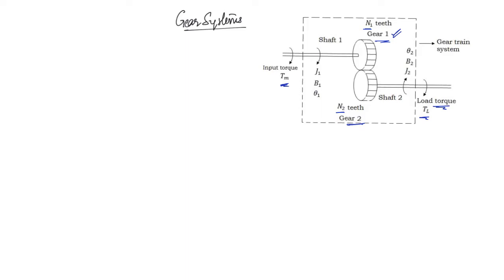We also have to consider the radius of the gears. The radius of gear 1 is R1, and of gear 2 is R2. J1 is the inertia, B1 is the friction coefficient, and theta 1 is the angular displacement. Similarly, on the second side you have J2, B2, and theta 2 — the inertia, friction coefficient, and angular displacement.